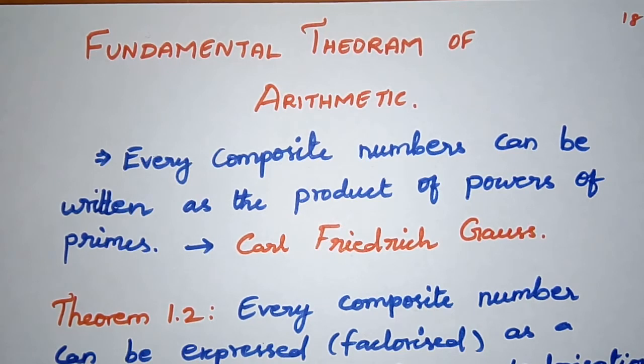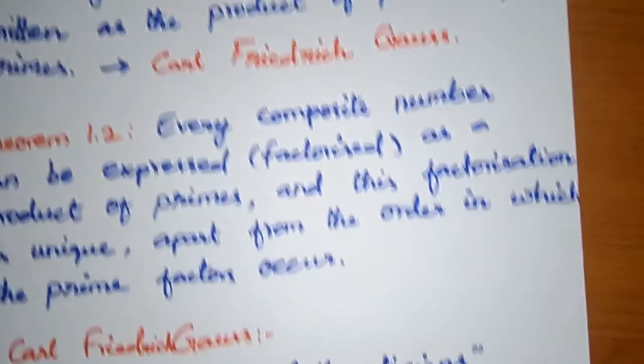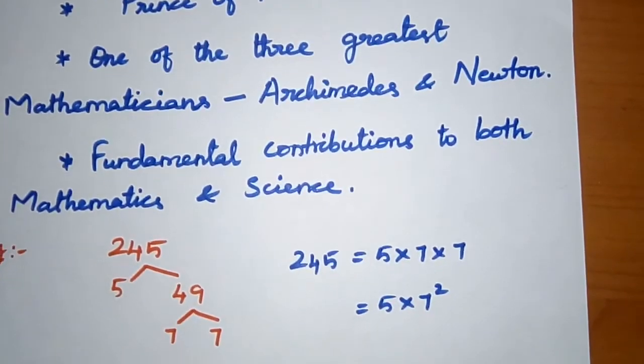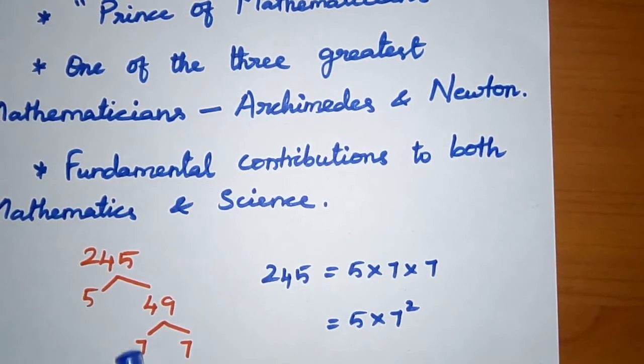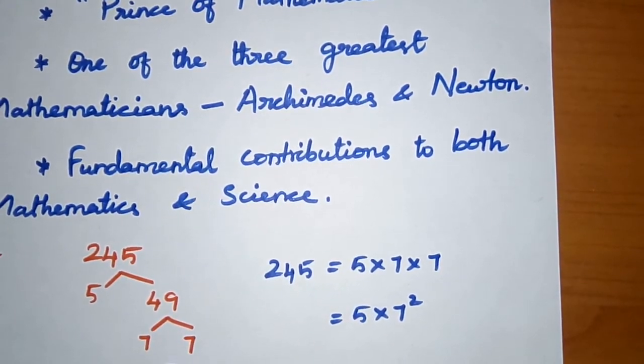We already saw in previous classes like seventh and eighth grades, to find out the HCF or LCM, we split the bigger values, the given numbers, into the form of prime numbers. If they give a huge number like 245, we split it into prime numbers.